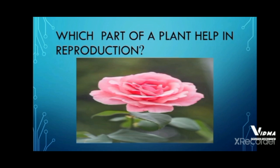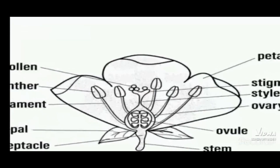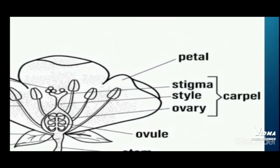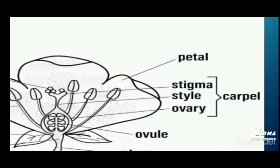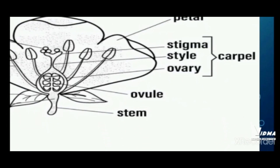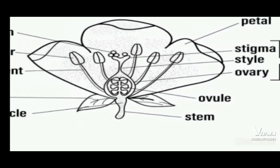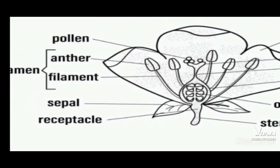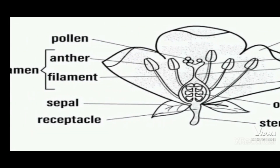We will talk about the reproductive part of the plant, that is the flower. There are different parts of the flower. The petals are the colored part of the flower which attract insects for pollination. The second part is the female reproductive part — the stigma, style, and ovary — consisting of a carpel, and inside the ovary there are ovules. The stalk attaches the flower to the plant.